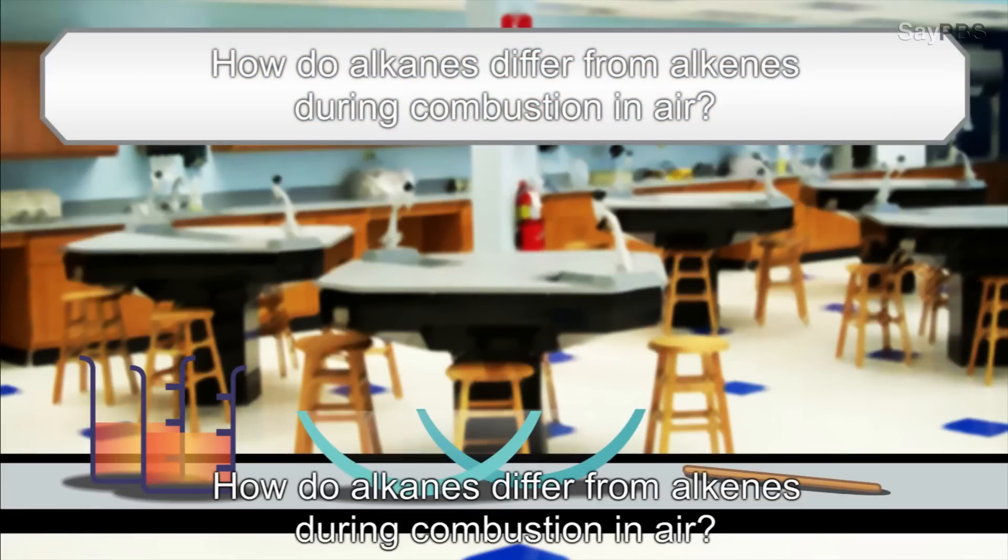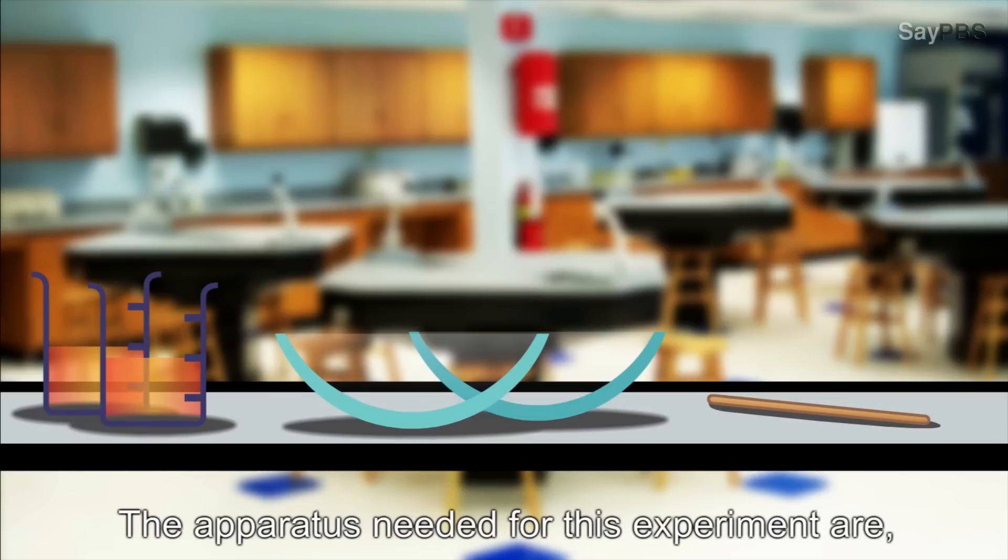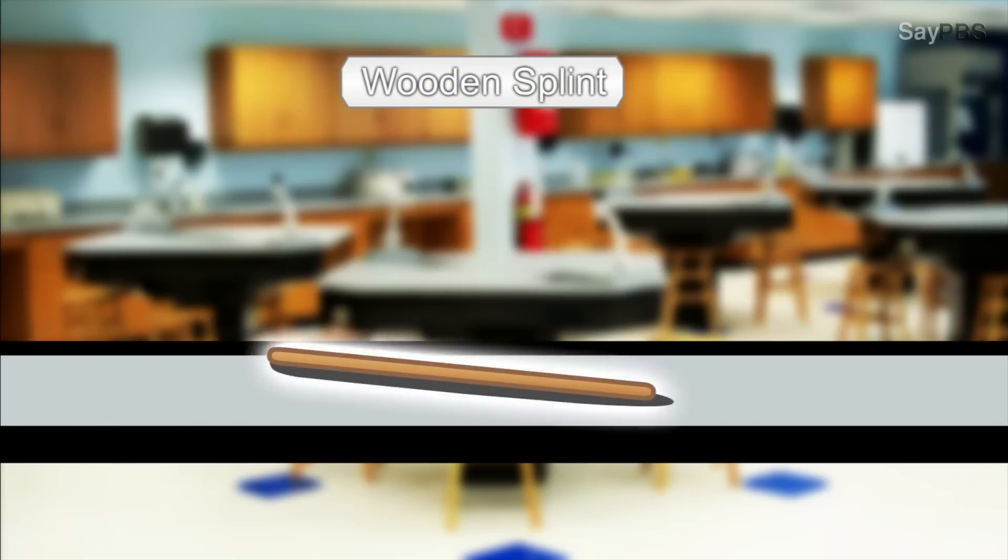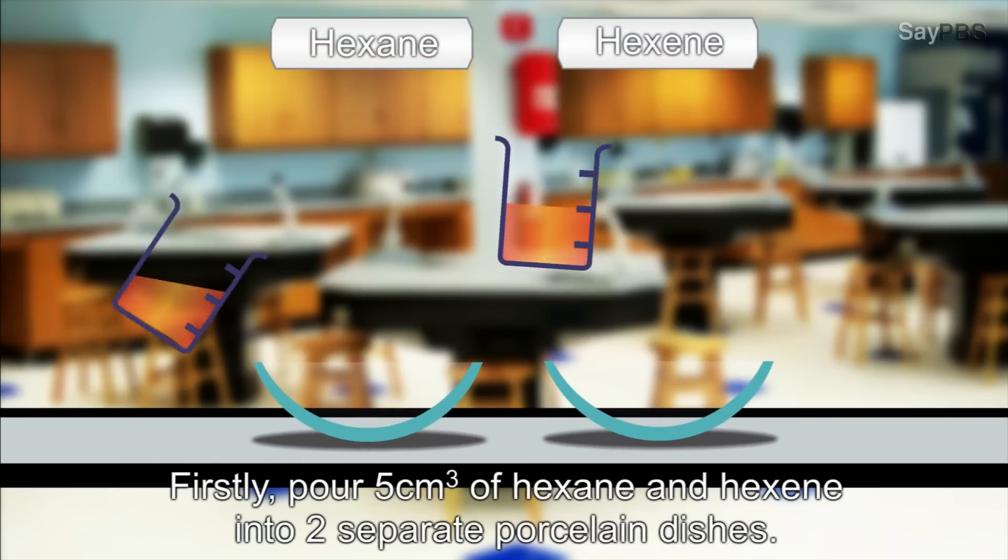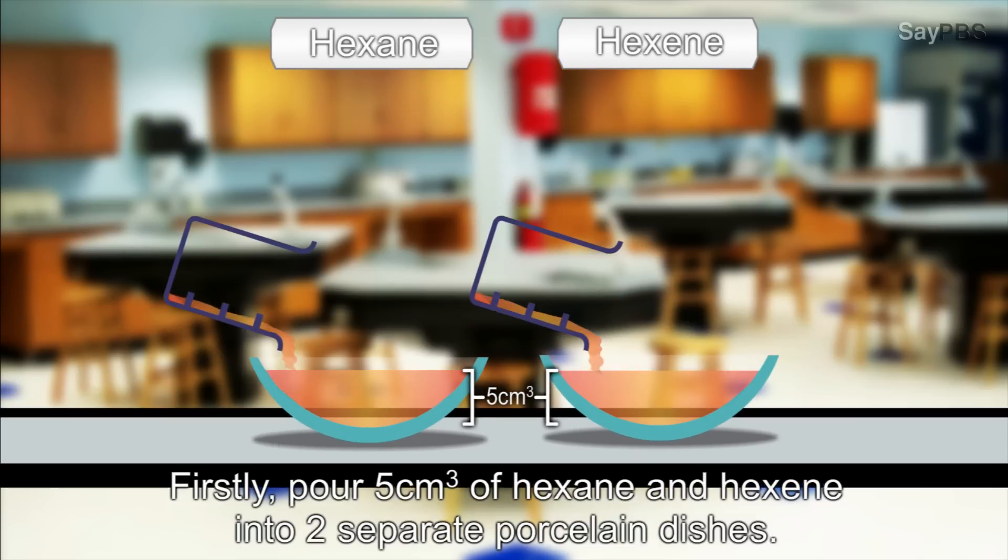How do alkanes differ from alkenes during combustion in air? The apparatus needed for this experiment are porcelain dishes, wooden splint, hexane and hexene. Firstly, pour 5 cubic centimeters of hexane and hexene into 2 separate porcelain dishes.